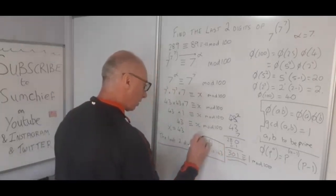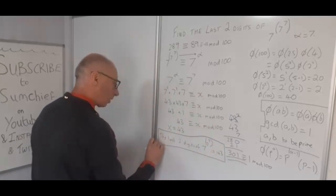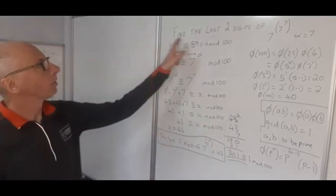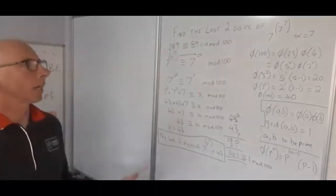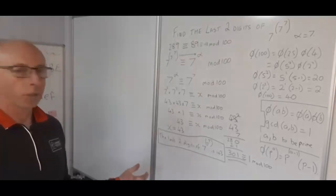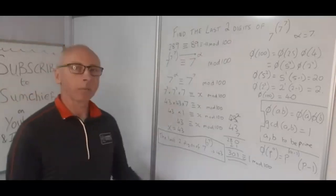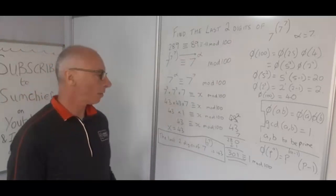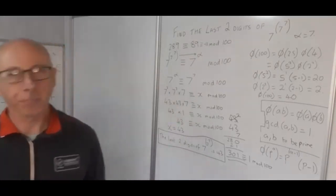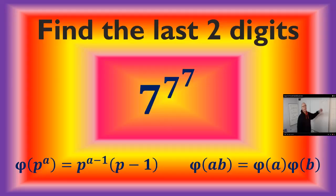Therefore, the last two digits of 7 to the 7 to the 7 are 43. You can try plugging that in or using other methods — let me know if 43 is the correct answer.